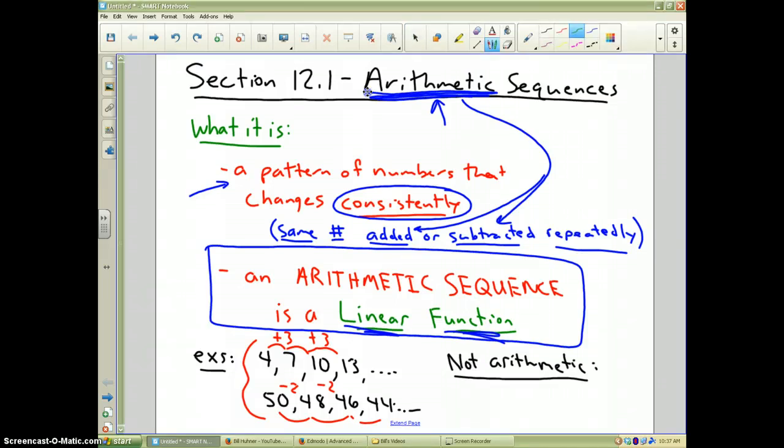Now here's an example of a sequence that's not arithmetic: 1, 3, 6, 10, 15. There's a pattern there, but it's not arithmetic because you add 2 and then you add 3 and then you add 4 and then you add 5. That is not arithmetic.